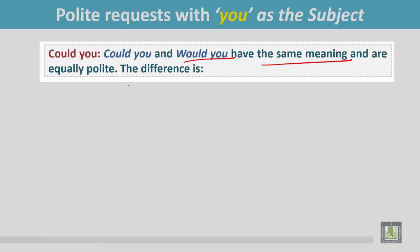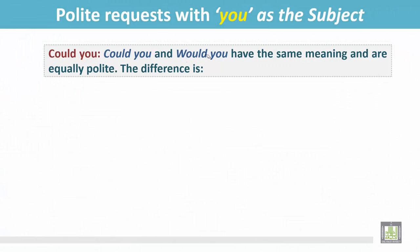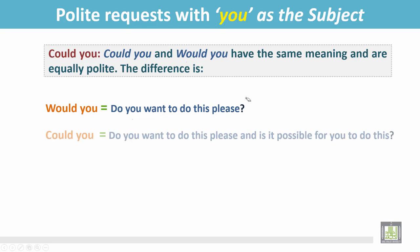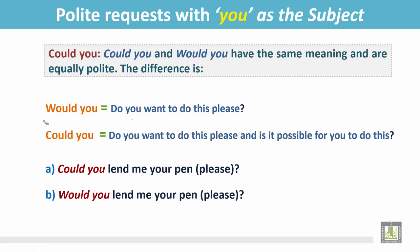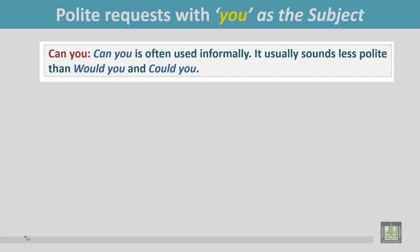Could you and Would you have the same meaning and are equally polite. The difference is: Would you means 'Do you want to do this, please?' and Could you means 'Is it possible for you to do this?' Examples: Could you lend me your pen? Would you lend me your pen?